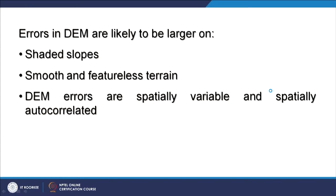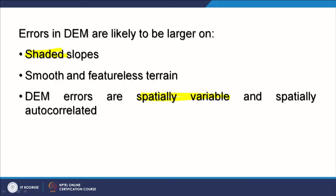An important point is that errors in a DEM are spatially variable. At some locations, the error may be different from others within the same file. In areas without shaded slopes, errors may be less, but in areas with shaded slopes, errors may be larger. Errors are spatially variable and also spatially autocorrelated, which creates additional challenges.